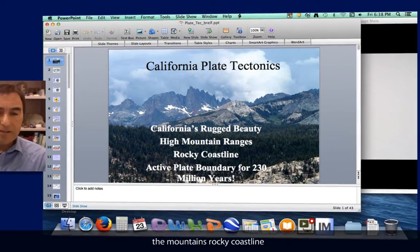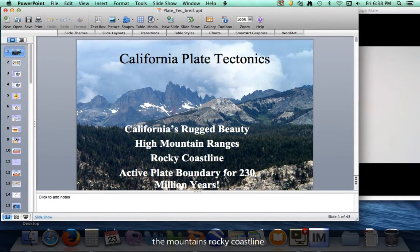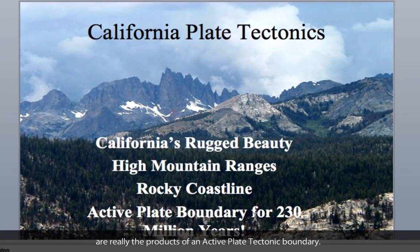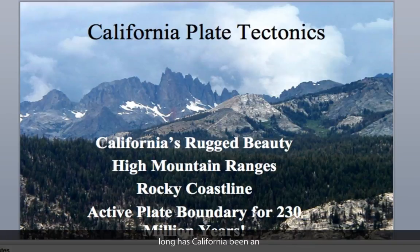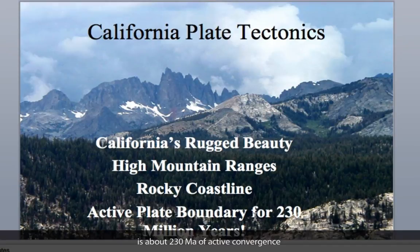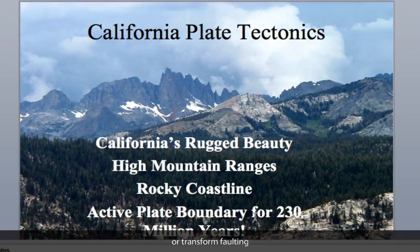California's rugged beauty, the mountains, the rocky coastline, are really the products of an active plate tectonic boundary. One of the questions in the study guide I ask is, how long has California been an active plate tectonic boundary? And the answer you see there is about 230 million years where there's been active convergence or transform faulting along our margin here.